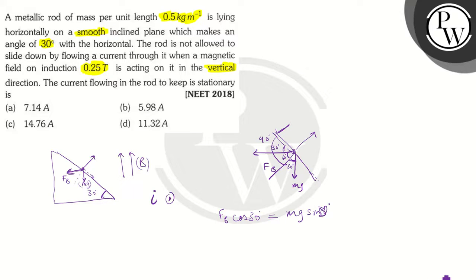Here we know Fb is equal to I L cross B. But in this case, L and B are in perpendicular direction. So, cross product yields I L B. Let's substitute this. We will get I L B cos 30 is going to be equal to Mg sin 30.